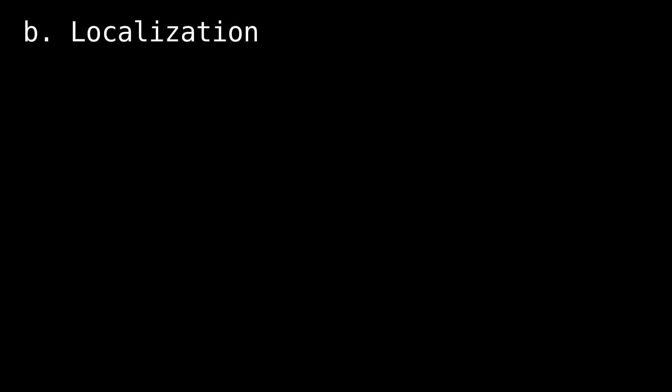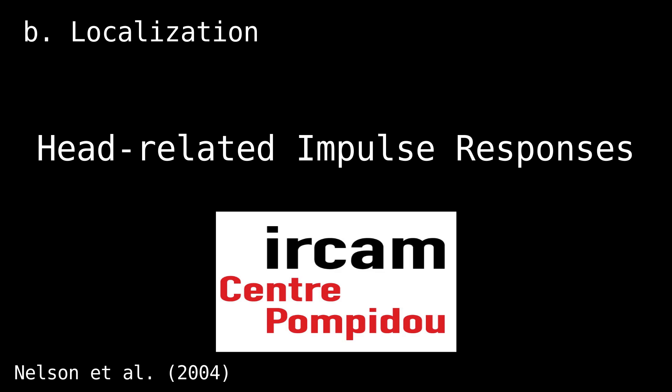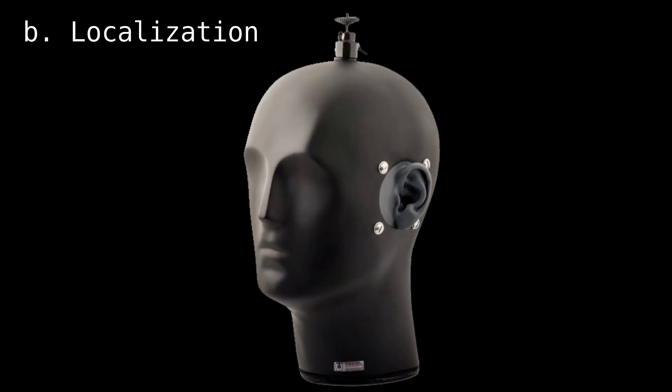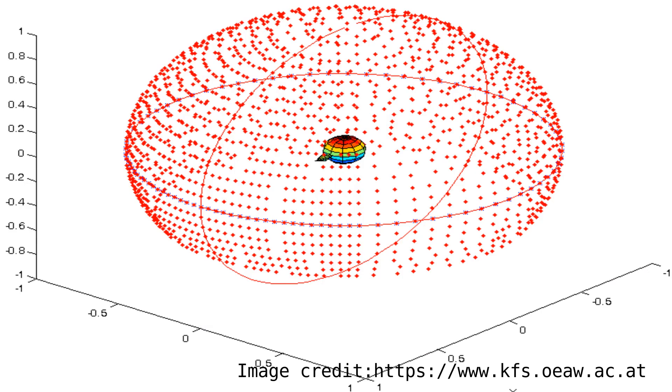For the localization, I use a database for head-related impulse responses from a company called IR Cam from France. The head-related impulse responses are recorded by placing high-quality microphones into each ear of a dummy head and moving a uniform sound source around the head. The recorded stereo audio responses are then paired with the direction they come from in the form of latitude and longitude.